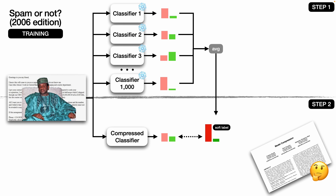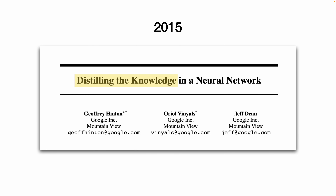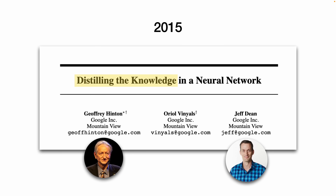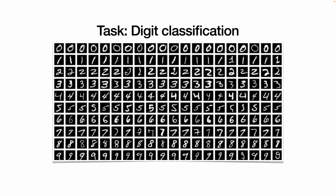By now, you might be thinking: okay, cool story about ensembles, but I clicked on a video about knowledge distillation. Well, this is knowledge distillation — it's just that the catchy name wasn't coined until nine years later. Jeffrey Hinton and Jeff Dean introduced it in a 2015 paper while at Google. Hinton went on to win the Turing Award in 2019, and Jeff Dean became Google's chief scientist in 2023. So they revisited the 2006 idea, but this time in the context of digit classification — given a grayscale 28x28 pixel image of a handwritten digit, the task was to classify it as one of the 10 digits, 0 through 9.